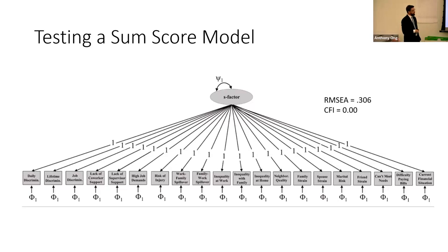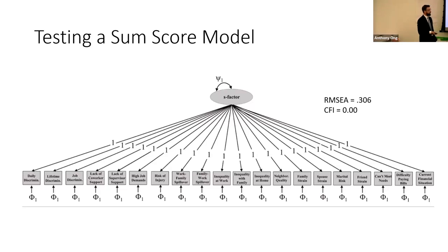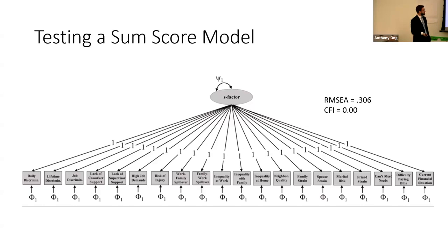When we formally test this sum score model from a traditional psychometric standpoint, the fit statistics are terrible. We want to see CFI typically above 0.9 and RMSEA below 0.05. With a CFI at zero and RMSEA at 0.306, this is evincing egregious fit to the data. From a measurement standpoint, the sum score model simply does not hold up.